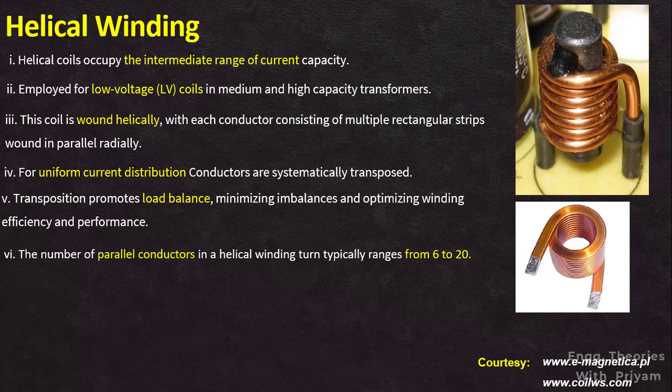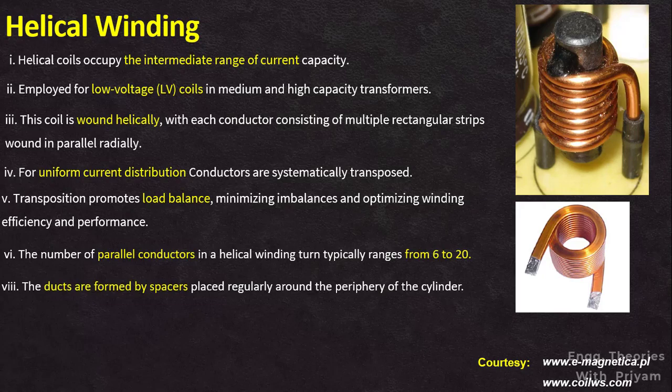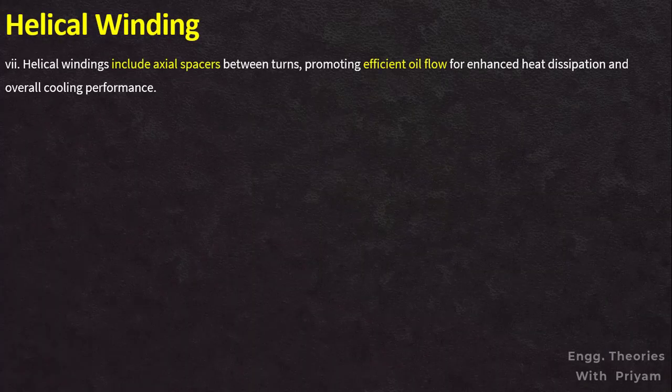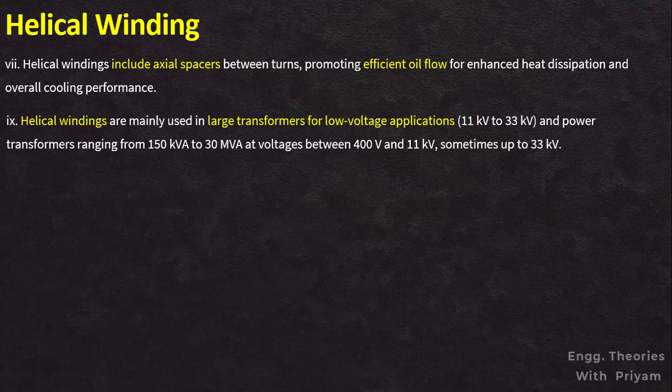The number of parallel conductors in a helical winding typically ranges from 6 to 20. Ducts are formed by spacers placed regularly around the periphery of the cylinder. Helical windings incorporate axial spacers placed between adjacent turns, which facilitate better oil flow within the winding, resulting in more efficient heat dissipation and enhanced cooling performance. Helical windings are mainly used in large transformers for low-voltage applications of 11 kV to 33 kV, and power transformers ranging from 150 kVA to 30 MVA at voltages between 400 volts and 11 kV, sometimes up to 33 kV.